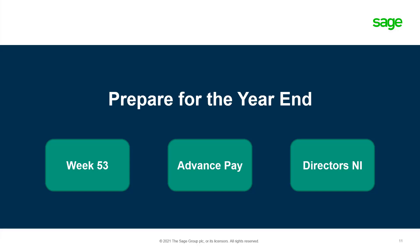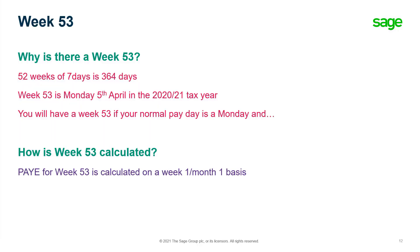Now let's look at preparation in terms of week 53, advanced pay, and directors' National Insurance. The number of days in the tax year doesn't divide into whole weeks — 52 weeks of 7 days is 364 days. Week 53 is Monday the 5th of April in the 2020-2021 tax year. You will have a week 53 if your normal payday is a Monday and you last paid your weekly employees on the 29th of March, your four-nightly paid employees on the 22nd of March, or your four-weekly paid employees on the 8th of March. Monthly paid employees cannot have a week 53.